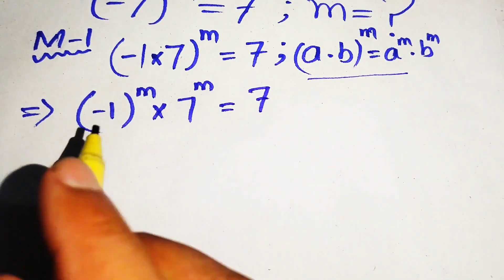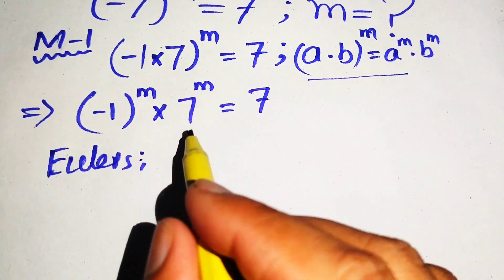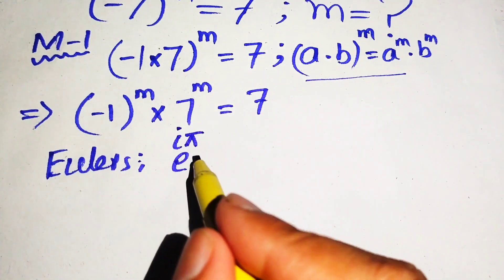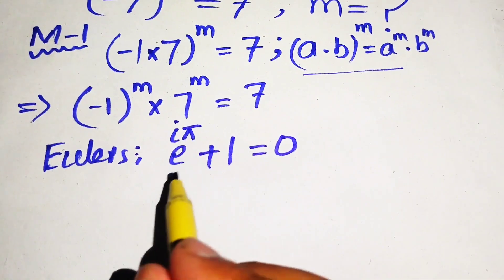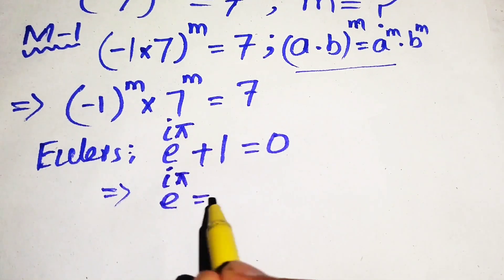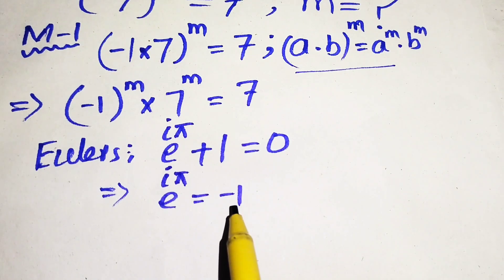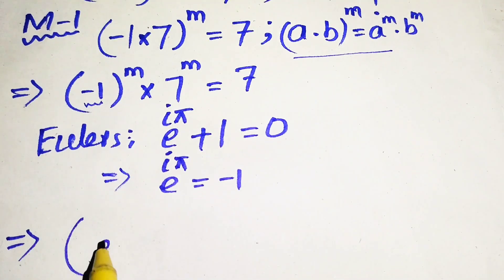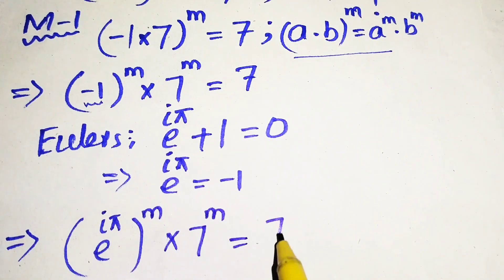We know by Euler's theorem — Euler's identity — that in trigonometric ratio form it is written as e to the power of iota pi plus 1 equals to 0. This means e to the power of iota pi equals to minus 1. We use this Euler's identity and replace minus 1 with e to the power of iota pi, so it becomes e to the power of iota pi, its whole power m, multiplied by 7 to the power of m equals to 7.